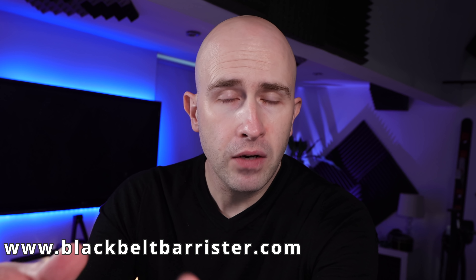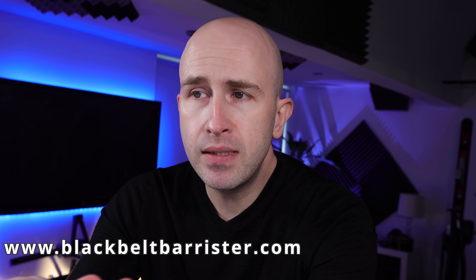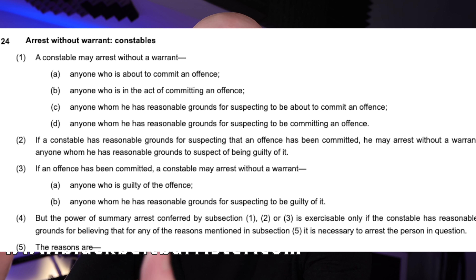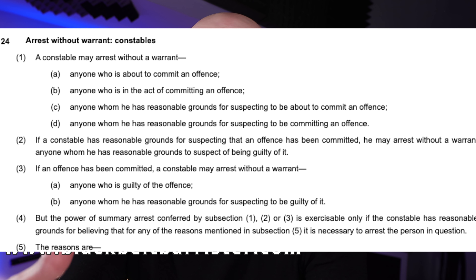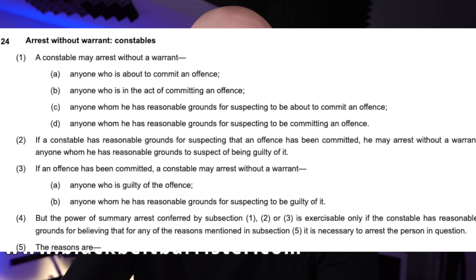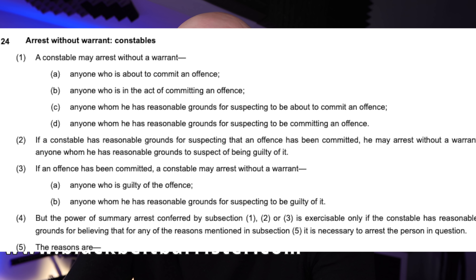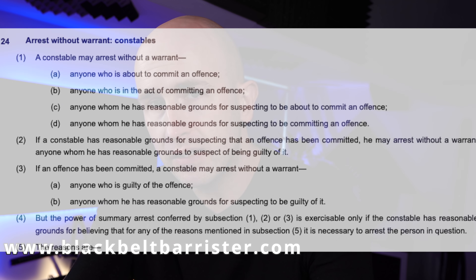The broad scope of the power of arrest covered in section 24 of PACE is that a constable may arrest anyone who is about to commit an offence, anyone who is in the act of committing an offence, anyone whom he has reasonable grounds for suspecting to be about to commit an offence, or anyone whom he has reasonable grounds for suspecting to be committing an offence. If a constable has reasonable grounds for suspecting that an offence has been committed, he may arrest anyone he has reasonable grounds to suspect of being guilty. And if an offence has been committed, a constable may arrest without a warrant anyone who is guilty or anyone he has reasonable grounds to suspect of being guilty.